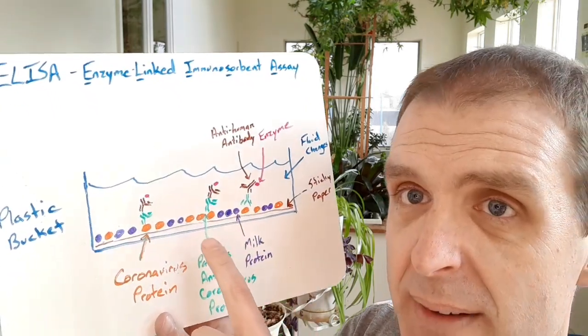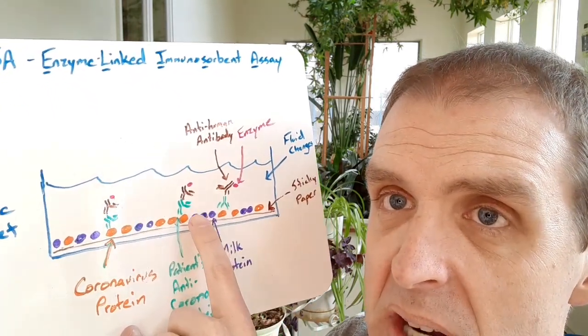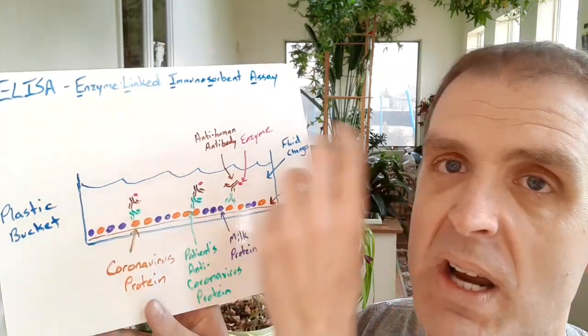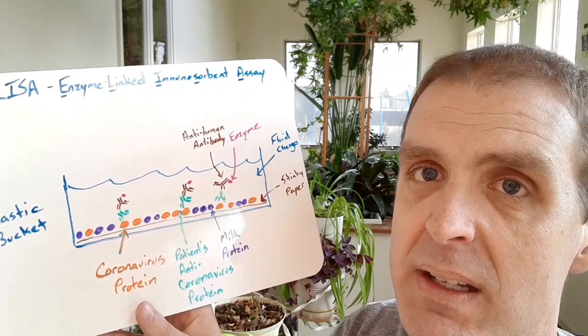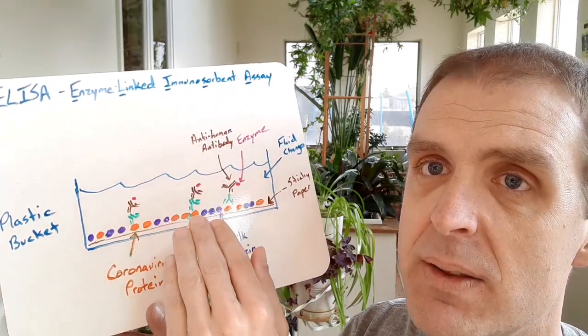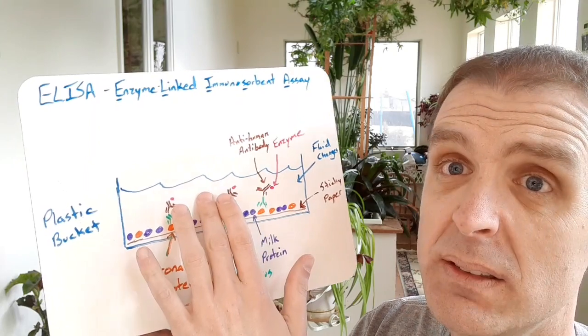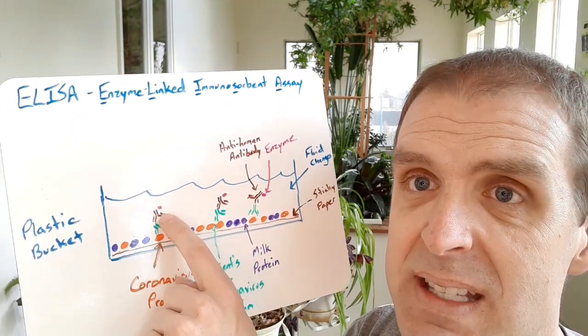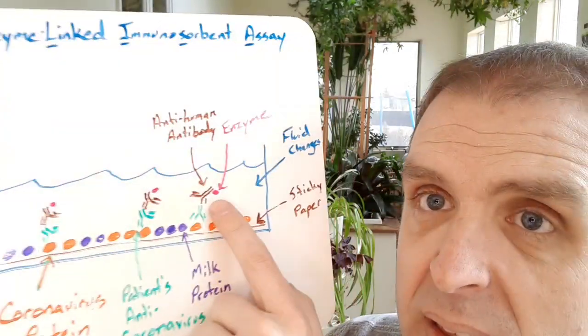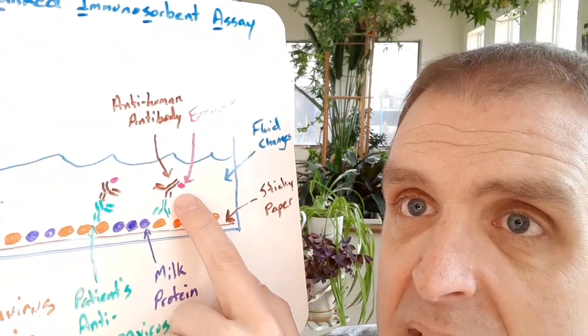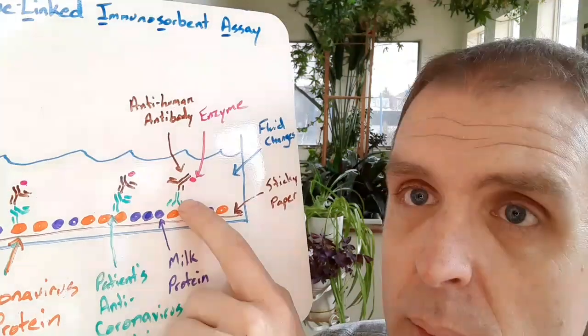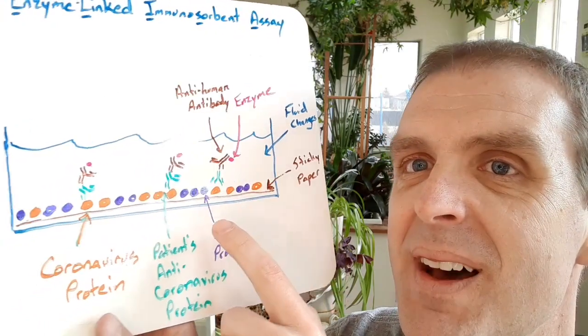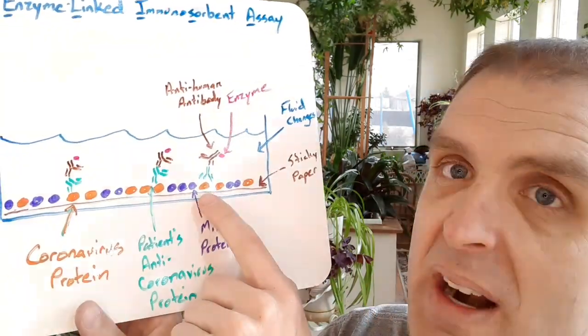You can put in the serum collected from a person that thinks they may have had coronavirus infection. If they do have antibodies—I've drawn them as those green-shaped Ys—they will stick to some of the coronavirus protein. You wash away any antibody that didn't stick, and then you come back into the well with the next fluid that has antibodies that have an enzyme linked to them.